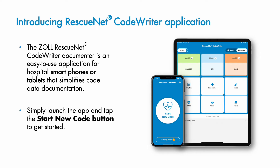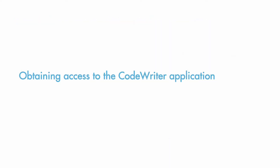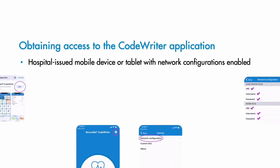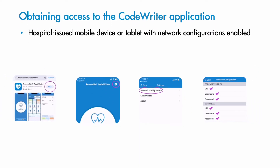Launching CodeWriter and tapping Start New Code opens an easy-to-use documentation screen for key data. The CodeWriter application is accessible from a mobile device or a tablet, depending on your hospital's preference. Often the application is installed during deployment with network configurations already enabled.